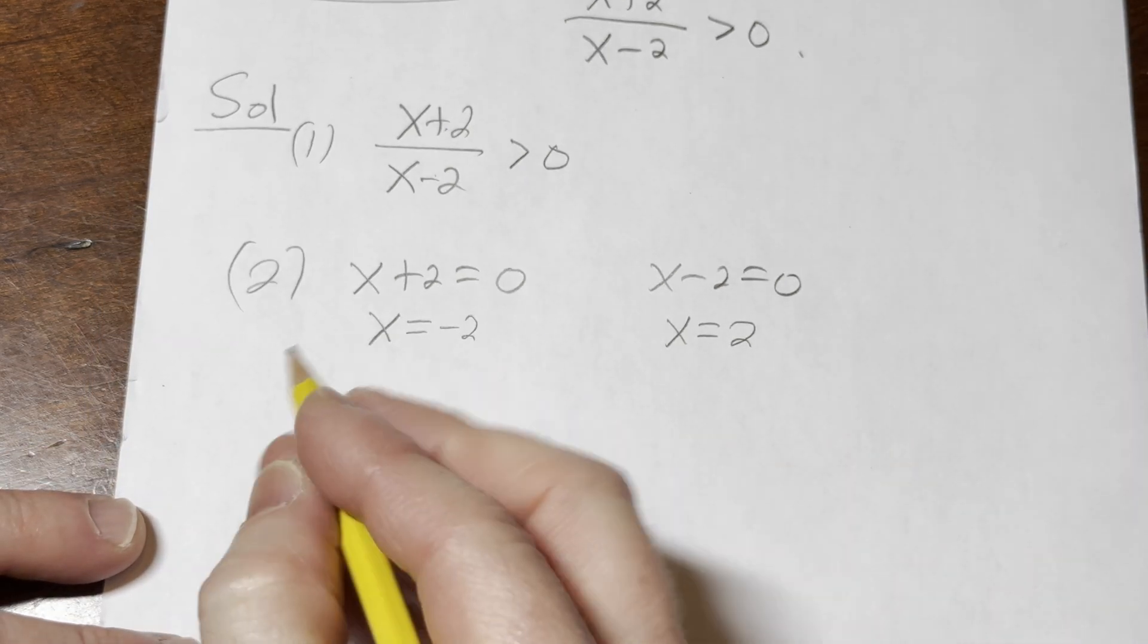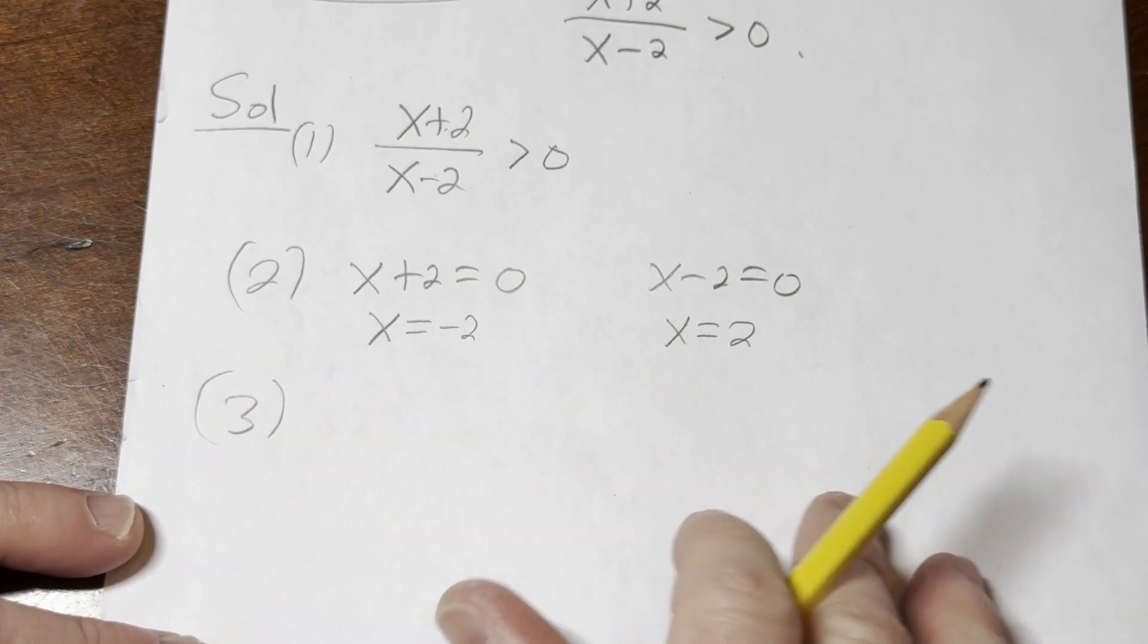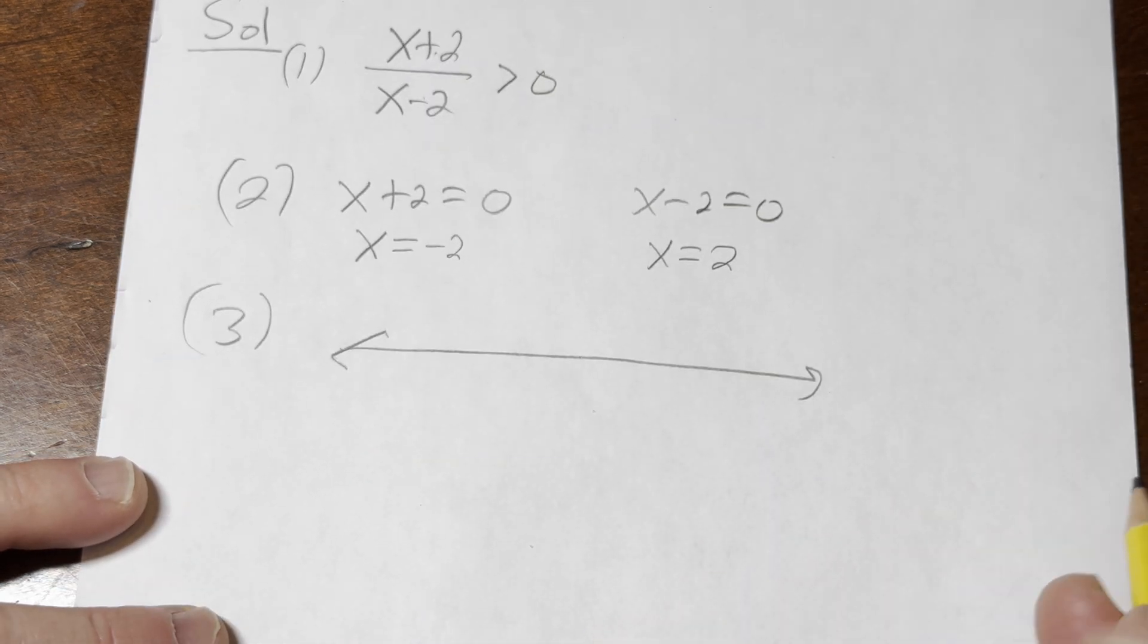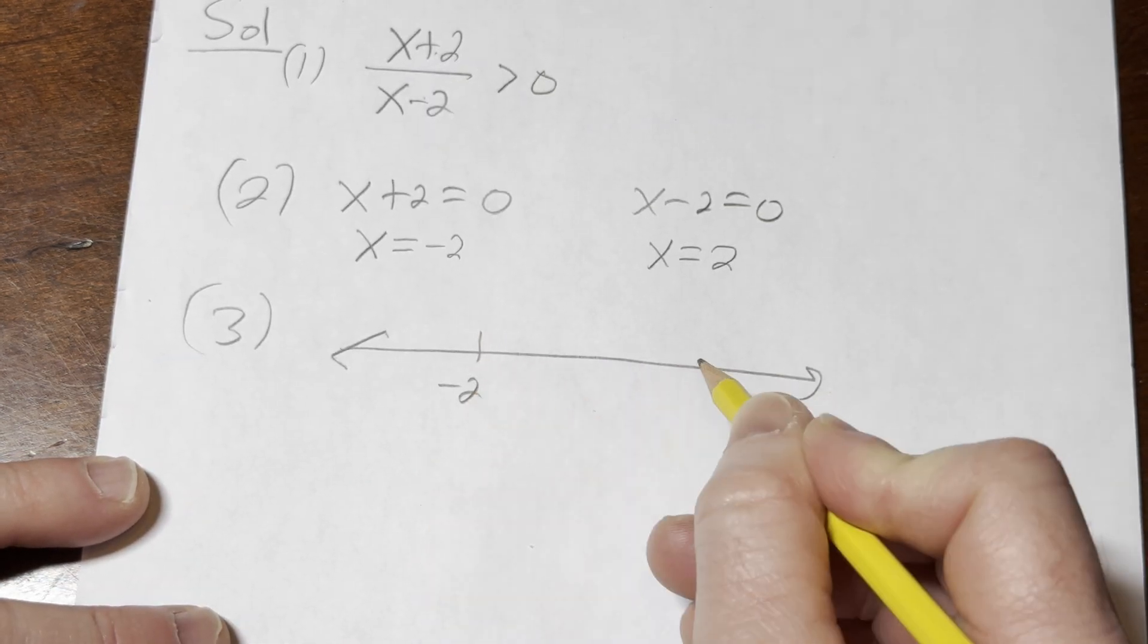Okay. Step three is to plot these on a number line and pick test points. So here's our number line. So this is going to be -2 and this is going to be 2.